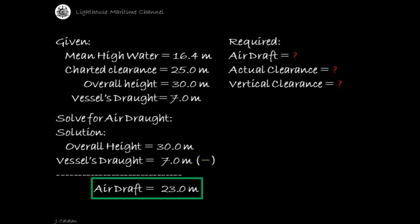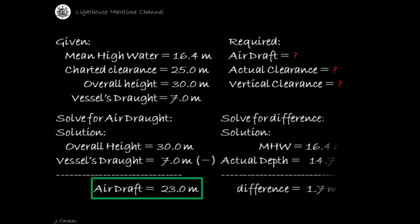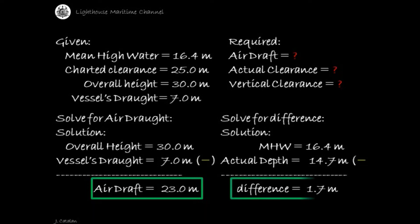Solve for difference. Solution: mean high water (16.4 meters) subtracted by the actual depth (14.7 meters). The result is the difference, which is equal to 1.7 meters.